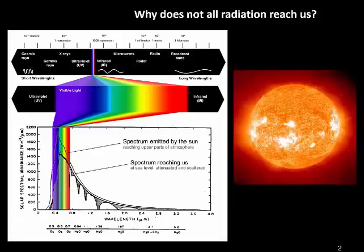In the previous videos, we talked a lot about EM radiation and how we can exploit that for remote sensing. But the reality is that much of the energy emitted by the sun does not reach the Earth, or is not useful in optical remote sensing. So here we have a diagram showing the electromagnetic spectrum.